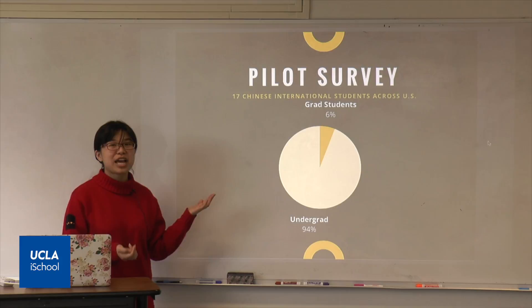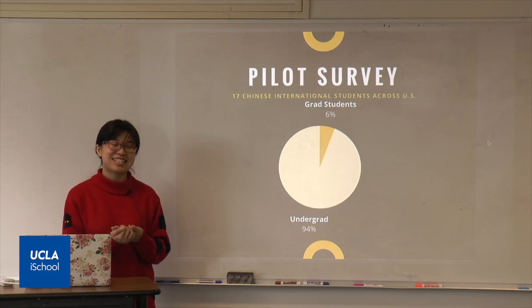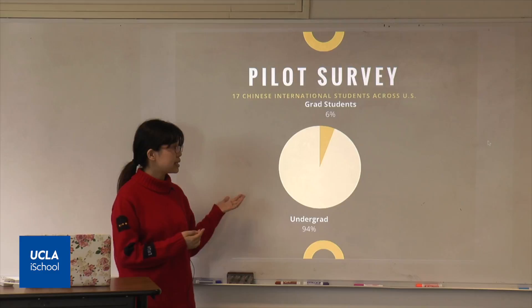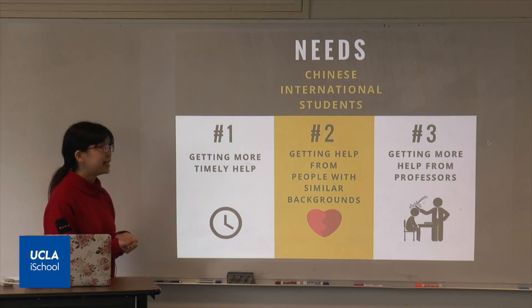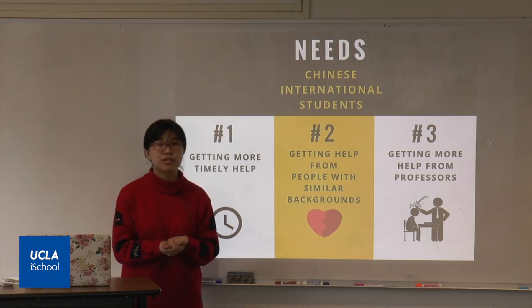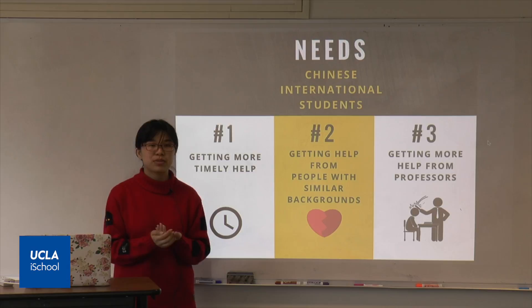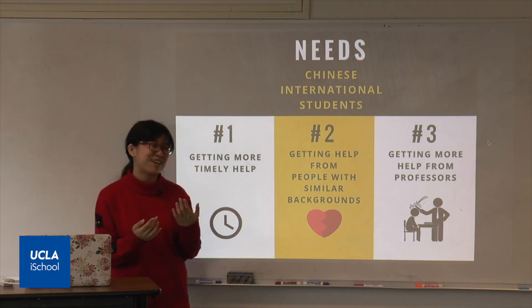This is a pilot survey I did last fall. I know this is a small pool — only 17 students answered my questions — but because of my long experience working with international students from my education consulting work and also my personal experience as an international student from China, I do think many of the findings are very representative of what I'm going to argue. From my survey, I discovered basically three needs of Chinese students: they want more timely help, and they want help from people with similar backgrounds.